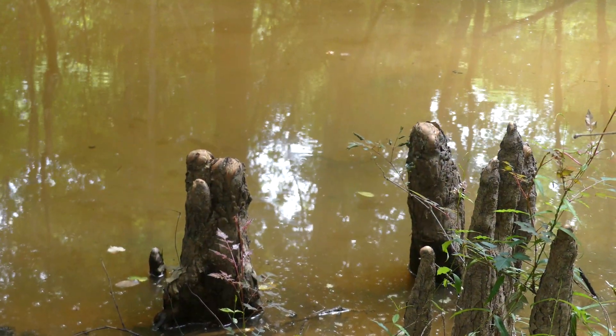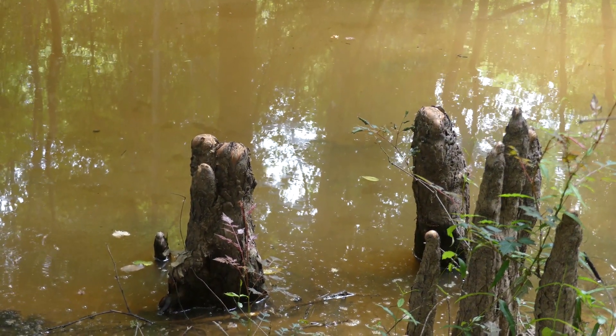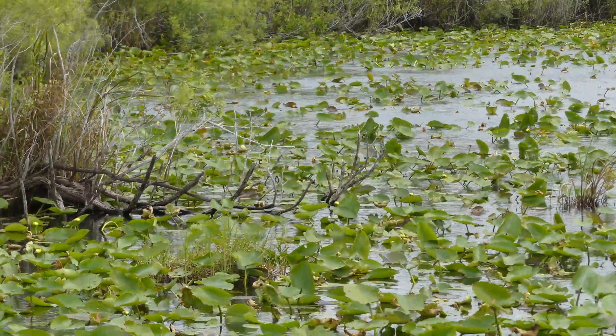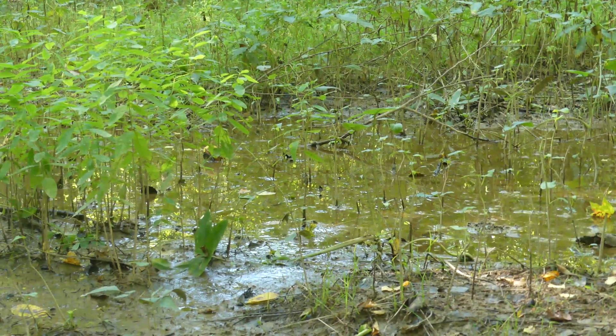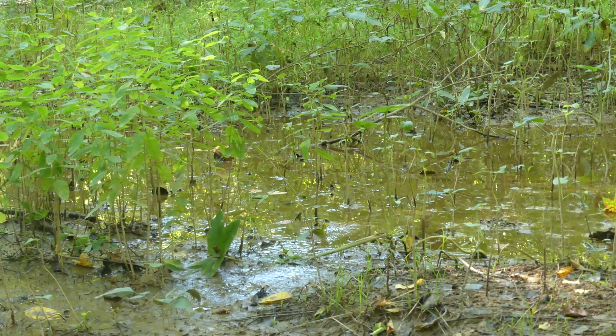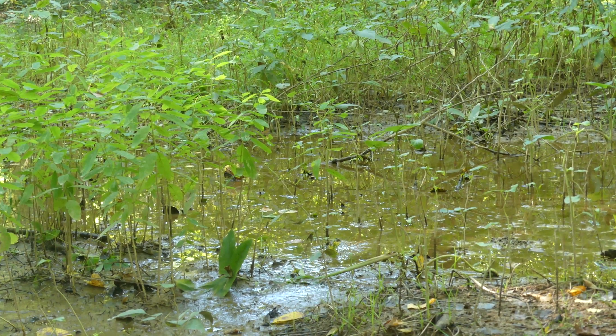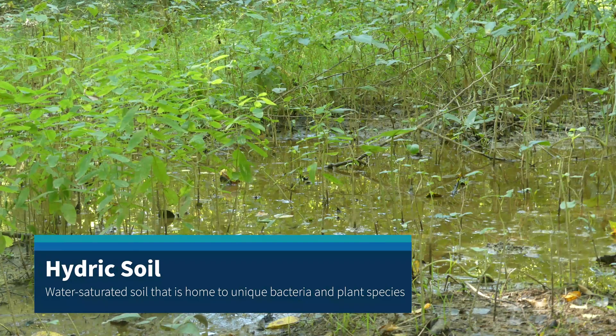Let's define what exactly a wetland is. Surprisingly enough, the defining characteristic of a wetland is wetness — okay, so maybe it wasn't that surprising, the name does start with wet. Water-saturated wetland soils are home to some very unique bacteria and plants, and are known as hydric soils. The presence of these hydric soils and vegetation is what officially defines a wetland, and makes them different than similar ecosystems like ponds or rivers.